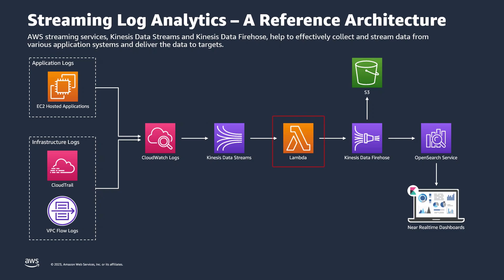KDS invokes an AWS Lambda function that transforms each log event to an Amazon OpenSearch service document, which is then put into Kinesis Data Firehose. Amazon Kinesis Data Firehose delivers the log event data to OpenSearch service. KDS offers native integration with Amazon OpenSearch. Optionally, this data can be stored in an Amazon S3 bucket for archiving or advanced analytics, such as machine learning using the log data.